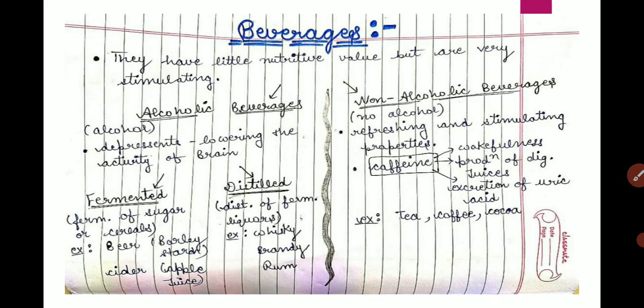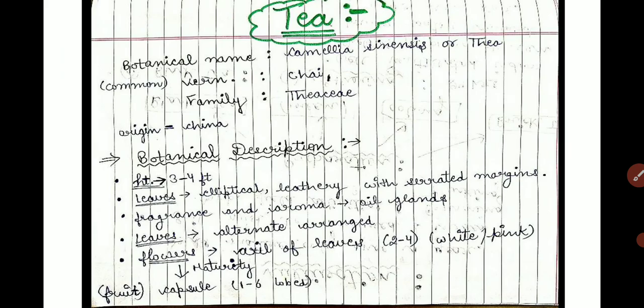Non-alcoholic beverages include tea, coffee, and cocoa. Now we'll talk about tea in detail. The botanical name is Camellia sinensis and Thea sinensis. Commonly we call it chai. It belongs to the Thea family.